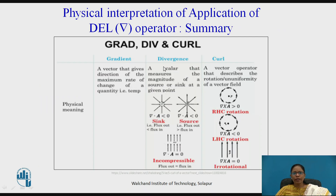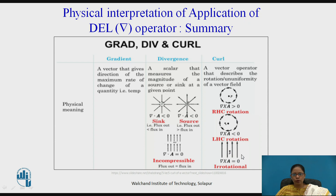In summary: Gradient is the maximum rate of change of a scalar quantity in a particular direction. Divergence is a scalar indicating source or sink — positive divergence means sourcing, negative means sinking, and zero divergence means neither. Curl describes circular rotation: right-hand clockwise rotation gives positive curl, left-hand clockwise rotation gives negative curl, and no rotation (irrotational) gives zero curl. This is the physical interpretation of gradient, divergence, and curl.